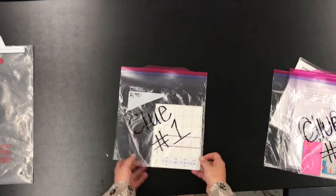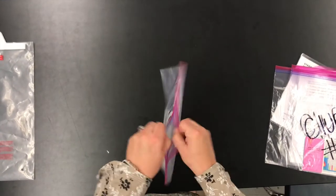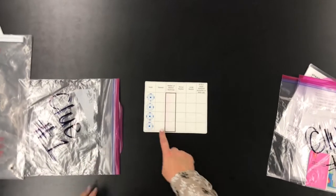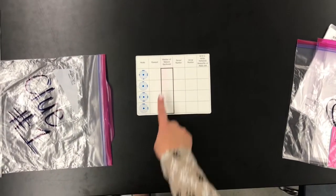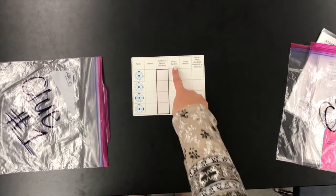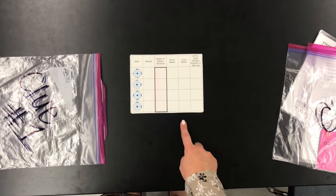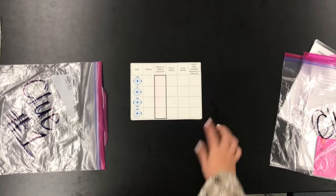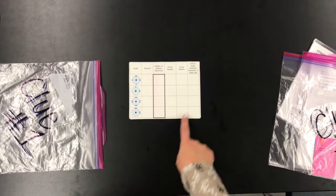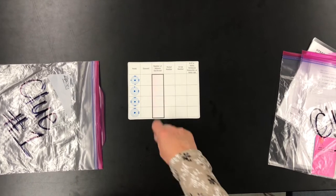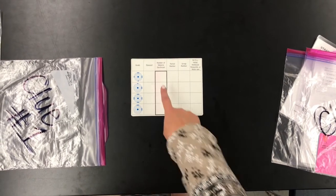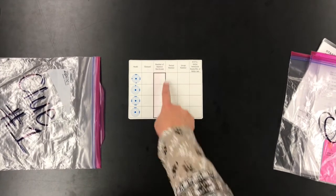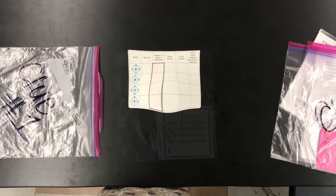Inside clue 1, we have the valence electron table. And here we have the models, the elements, number of valence electrons, period number, group number, and is it a metal, metalloid, non-metal, or noble gas. They can fill this out using their dry erase marker, scratch paper, and when they fill in the numbers, this box tells them the digits to the four-digit lock.